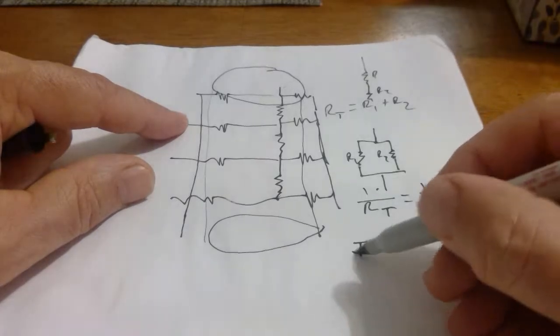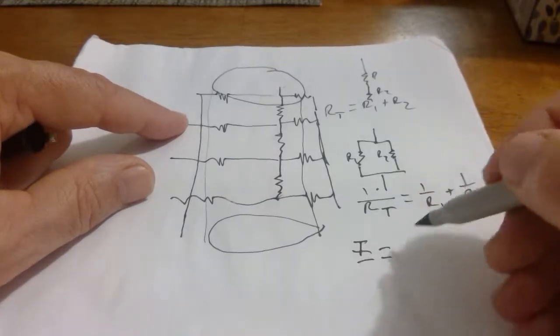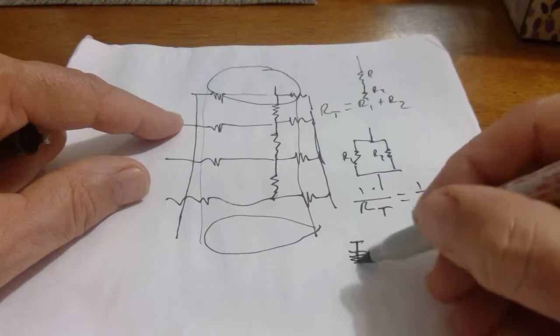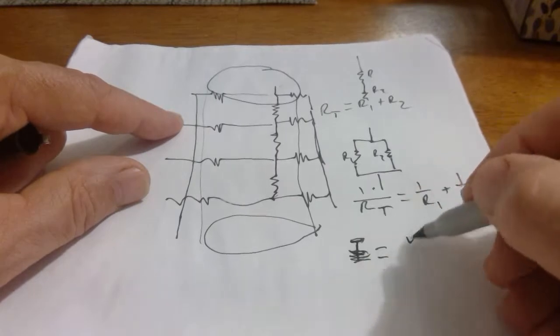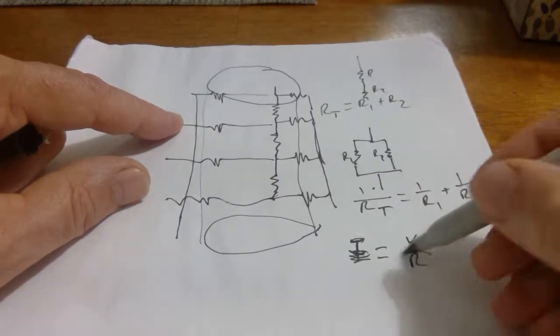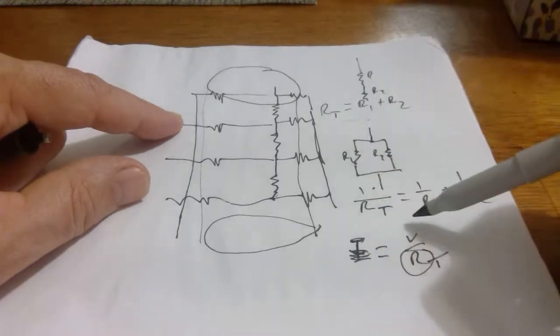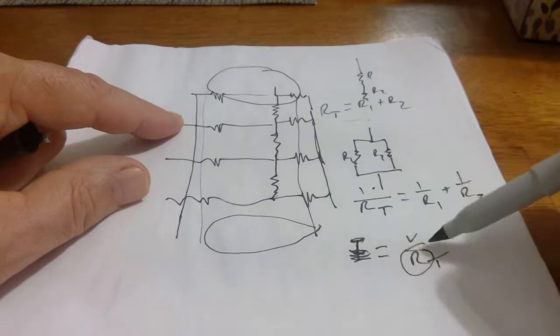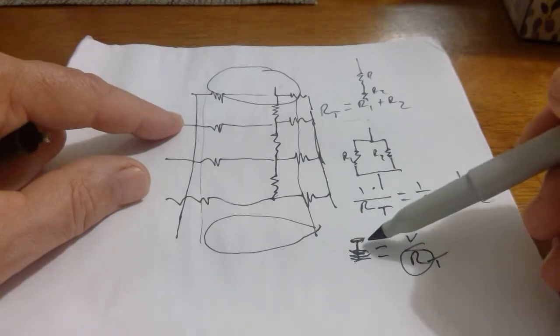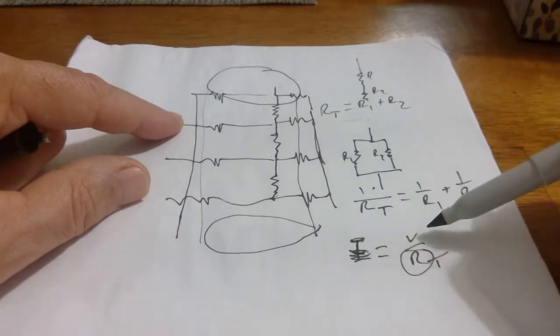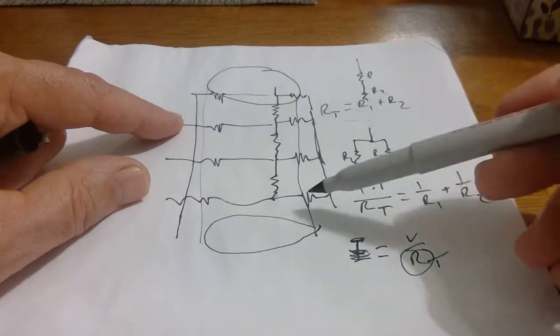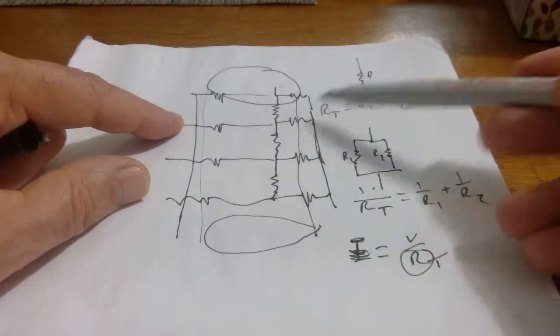And remember all this fits with Ohm's law. I equals V over R. So what you can do is use R total here, depending on if it's in series or parallel. You can calculate. Then if you know the current that you're injecting in, then you can calculate the voltage.